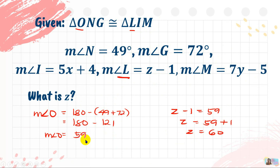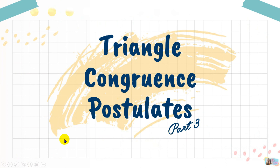That's all for this topic: solving parts of congruent triangles. We solved for missing parts using the postulates and CPCTC. If we have two congruent triangles, the corresponding parts are also congruent. To solve, first identify the corresponding congruent parts from the two triangles, then solve algebraically. I hope you learned something. Please like and share this video, and don't forget to subscribe to stay updated on future videos. Keep safe everyone. God bless.